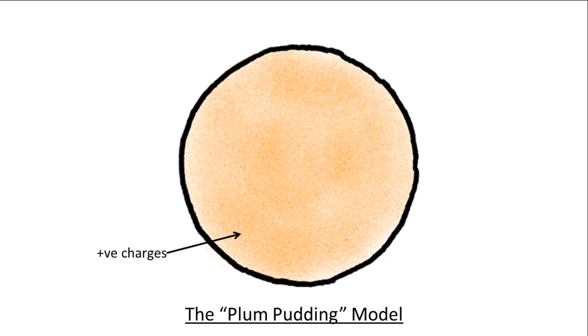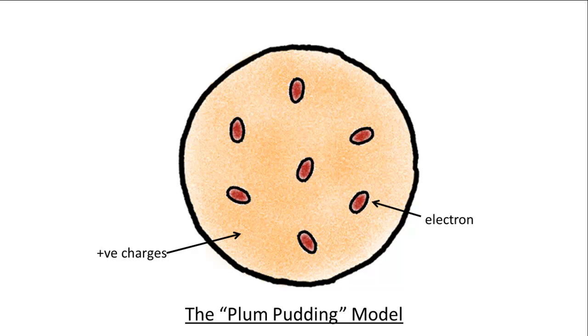Physicists knew that an atom contains both negative and positive charges, so they imagined an atom is like one big lump of positive charges with electrons sprinkled inside, like a soft yummy bun with raisins.